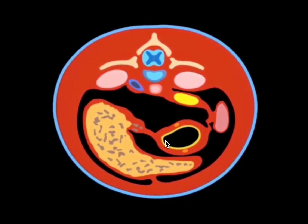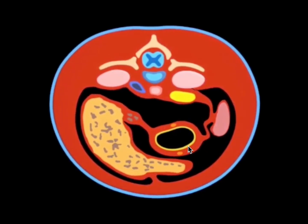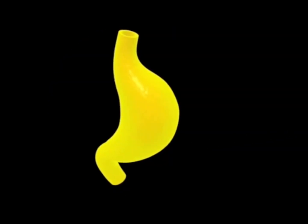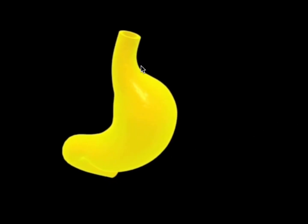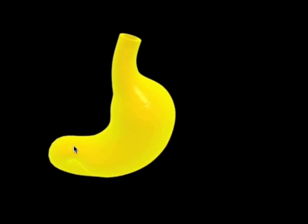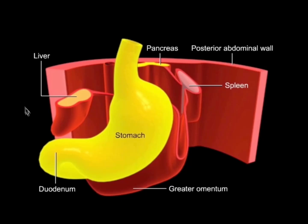The left side of the primordial stomach is established as the ventral surface and the right side as the dorsal surface. As this happens, the proximal part of the stomach moves caudally and the distal part moves cranially, squishing in on itself in the coronal plane. After all is said and done, the stomach goes from a flat fish along the median plane to a C-shape along the coronal plane during weeks six to seven.